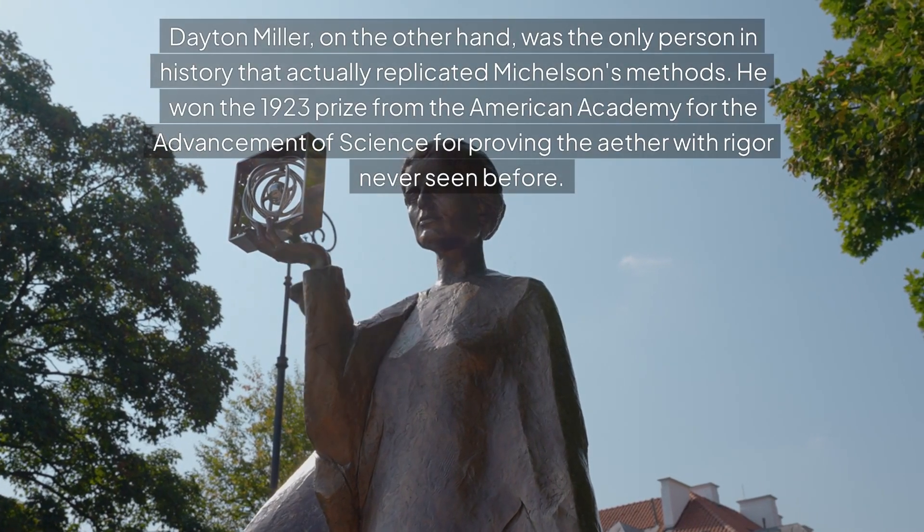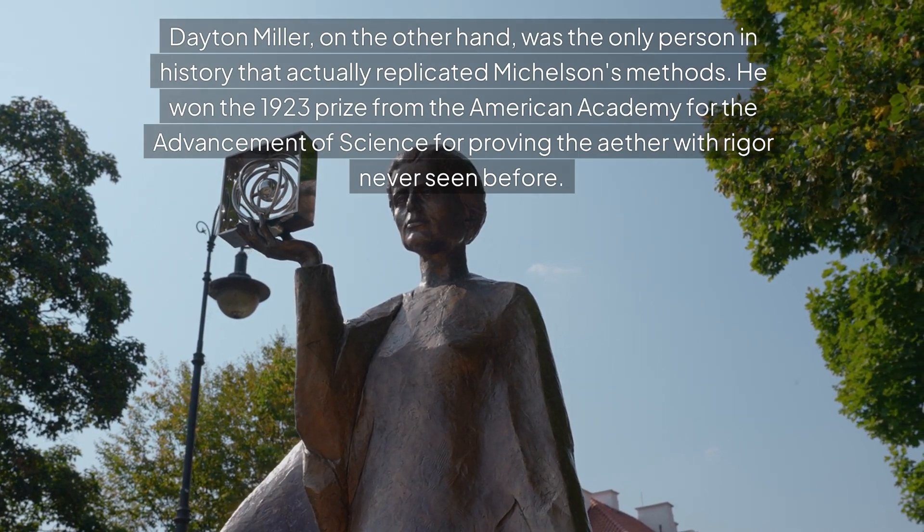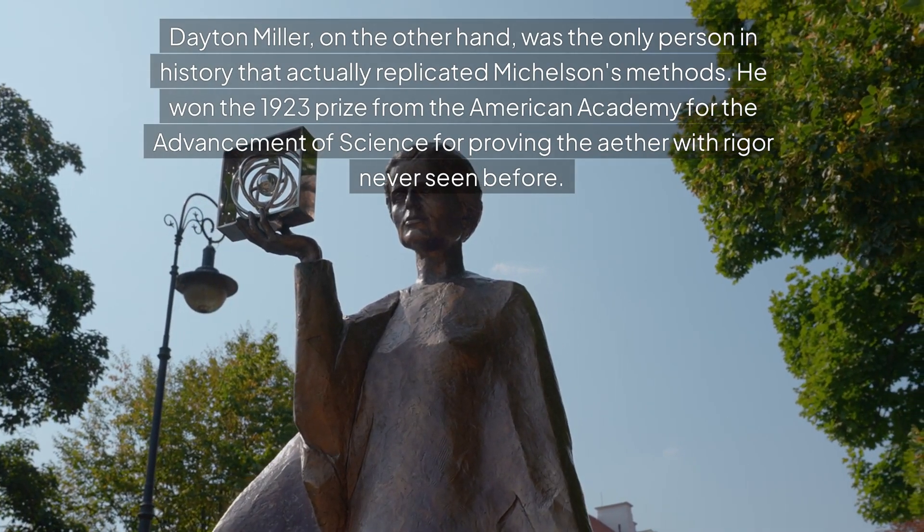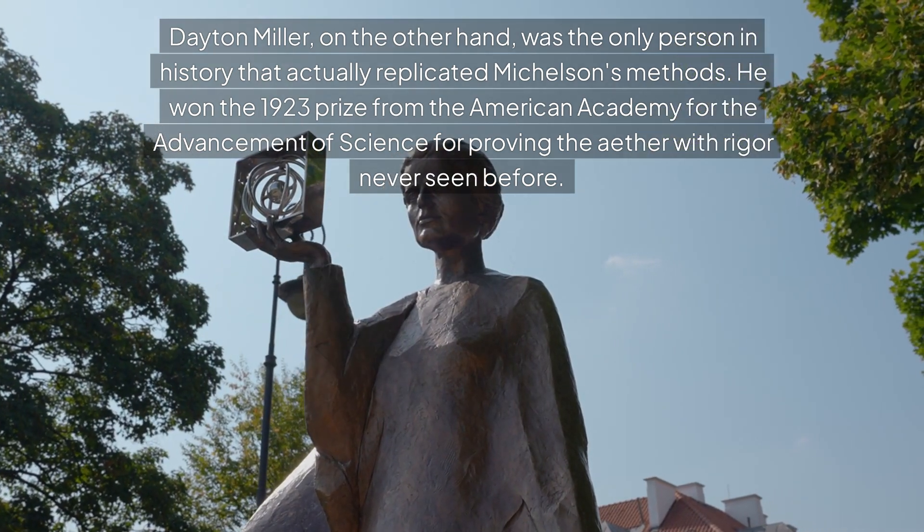Dayton Miller, on the other hand, was the only person in history that actually replicated Michelson's methods. He won the 1923 prize from the American Academy for the advancement of science for proving the ether with rigor never seen before.